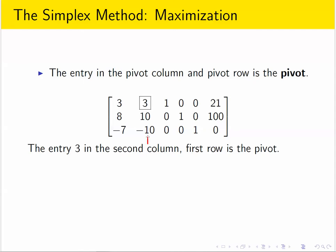For us, the second column is the pivot column. The first row is the pivot row. And so this entry, this 3, is our pivot.